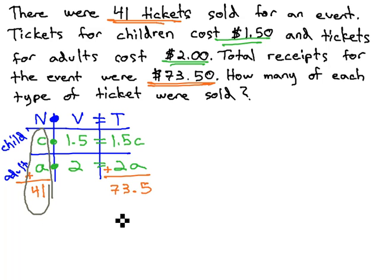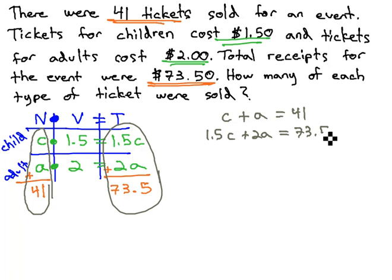Now, we can see an equation coming off the first and last column that we can use to solve and answer this question. Children plus adults is equal to 41, and 1.5 children plus 2 adults is equal to 73.5.